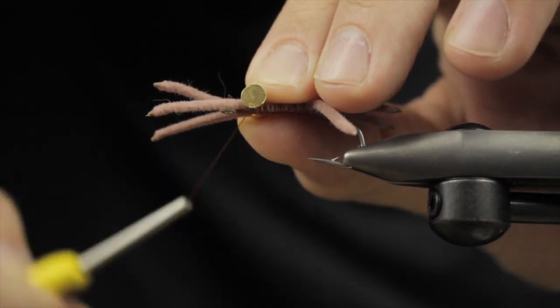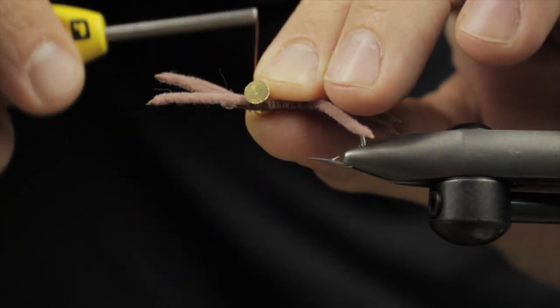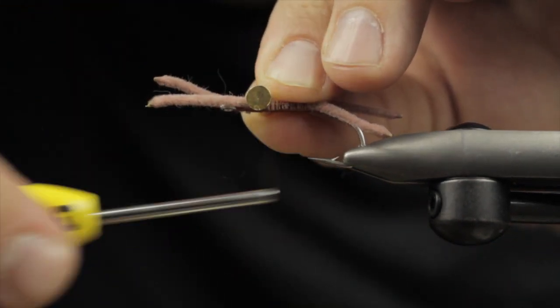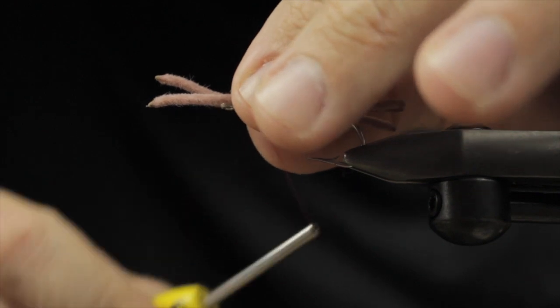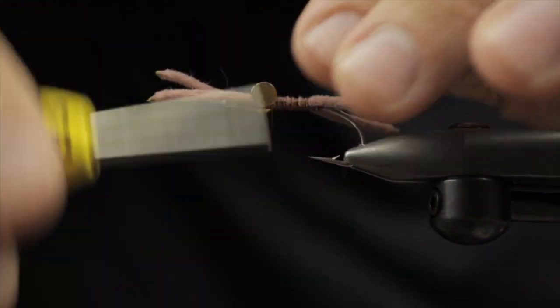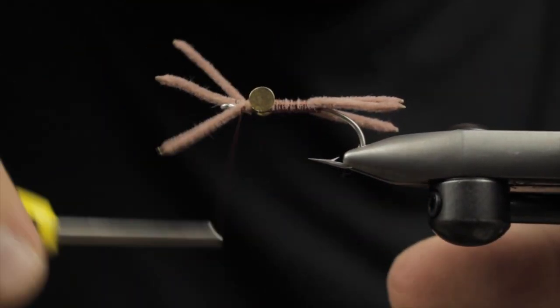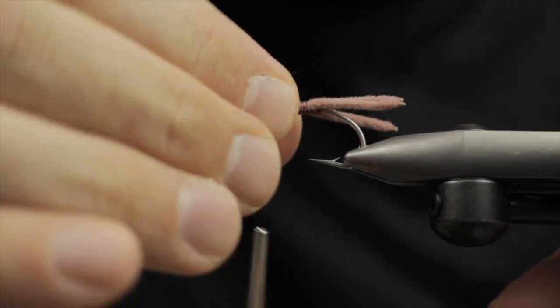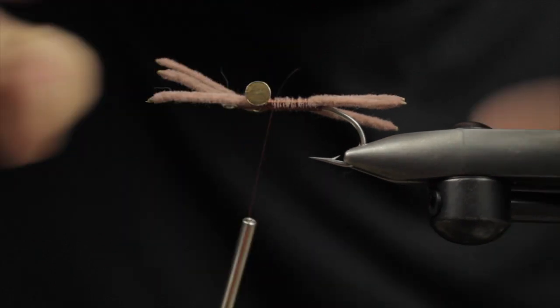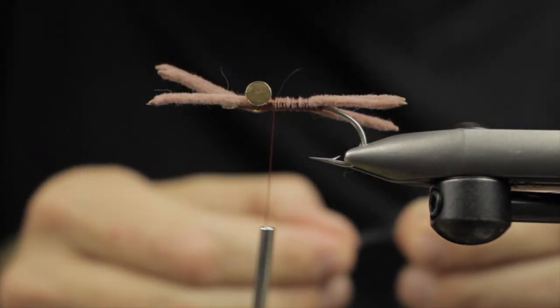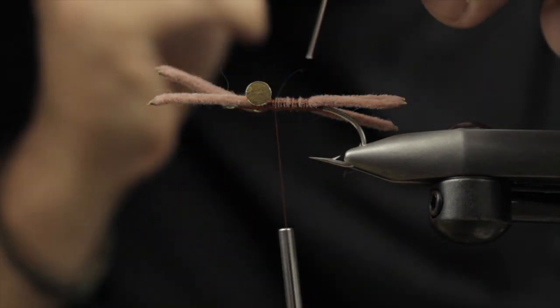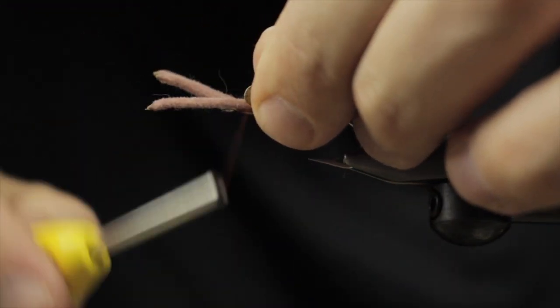This is a medium tungsten dumbbell eye. You can substitute in with bead chain, brass, whatever you see fit here. I designed these to get down really quick and scoot along the bottom. If you get a little bit overboard like I did, the legs will get in your way. But they're offset eyes as well so I kind of rotate them to create a flat spot.